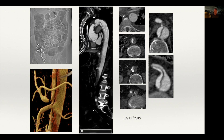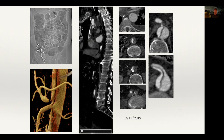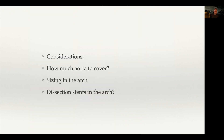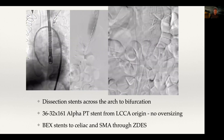Key considerations for intervention include: how much aorta to cover — in the acute phase, more coverage increases spinal cord ischemia risk — how to size in a dissected arch, and whether to place dissection stents in the aortic arch. The decision was to deploy uncovered dissection stents across the aortic arch, landing distally in the surgical graft. These are bare uncovered stents placed across the arch vessels, with the goal of scaffolding open the dissection across the arch.